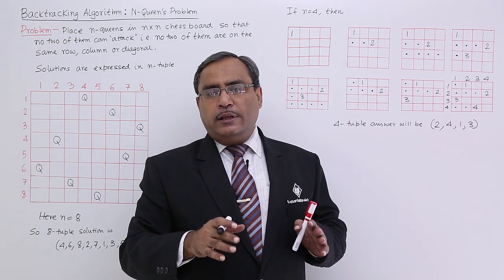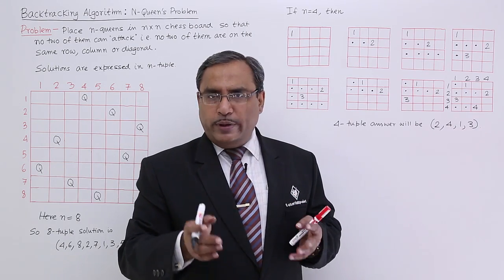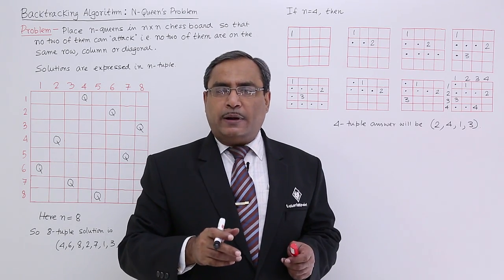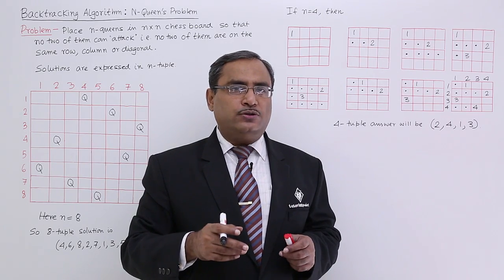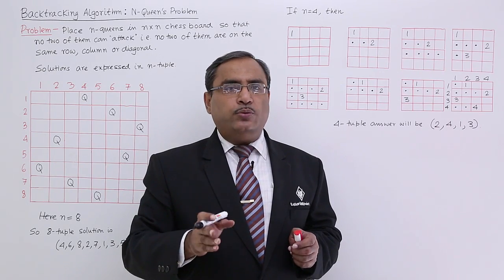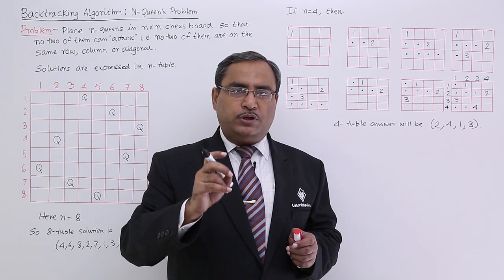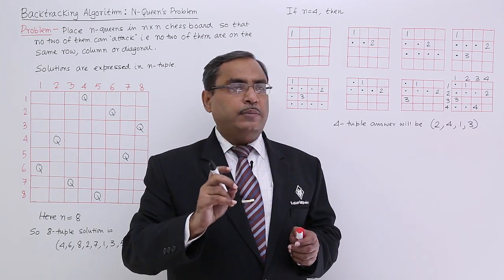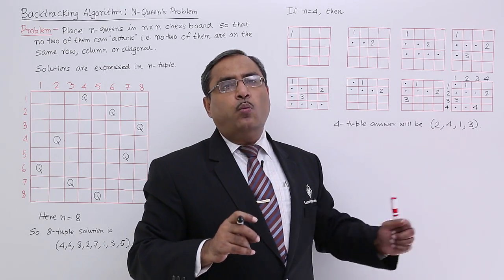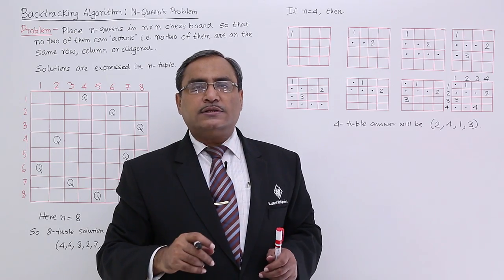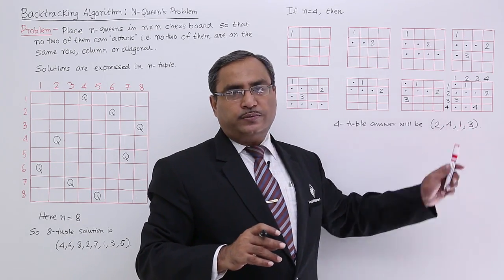This algorithm seems to require a two-dimensional array, but it can be handled with a one-dimensional array because the ith queen will always be at the ith row. We only need to keep the column numbers, so the solution can be stored in a 1D array of size N.